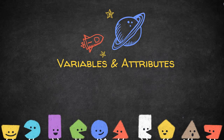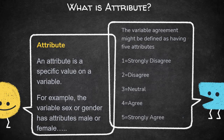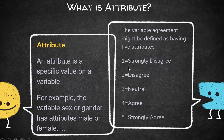The next important concept in variables is attributes. What is an attribute? An attribute is a specific value on a variable. So in the earlier example, gender has two attributes: male or female. Whereas the variable agreement might be defined as having five attributes from strongly disagree to strongly agree. Each option is an attribute. So being male or female is an attribute of the variable sex or gender.